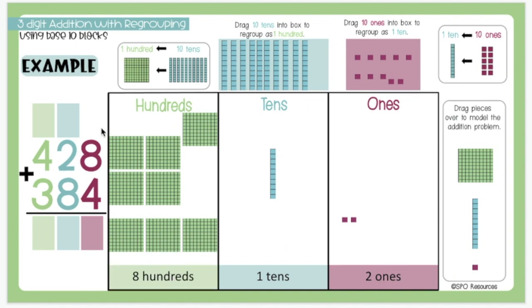I will now show the problem using the standard algorithm. 8 plus 4 is 12. 2 ones carry over 1 ten. 1 plus 2 plus 8 is 11. 1 ten carry over 100. 1 plus 4 plus 3 is 8. My sum is 812.